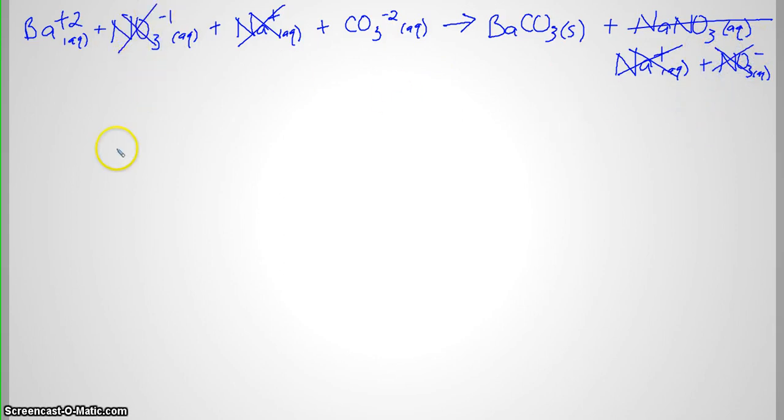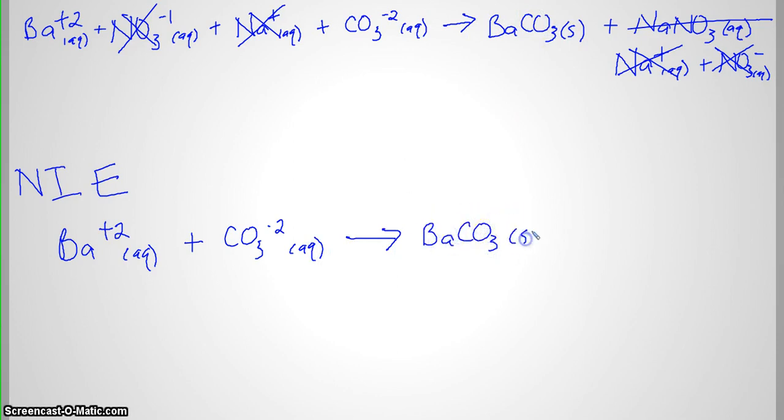So in our net ionic equation, that's our grand finale, net ionic equation, we're going to have our barium ion plus our carbonate ion gives us solid barium carbonate. That is the most important part of the reaction. That is what actually happened chemically. The barium ions and the carbonate ions bonded together to make solid barium carbonate, which is the precipitate. So the net ionic equation, that is what we're looking for in the end. And that is our final answer.